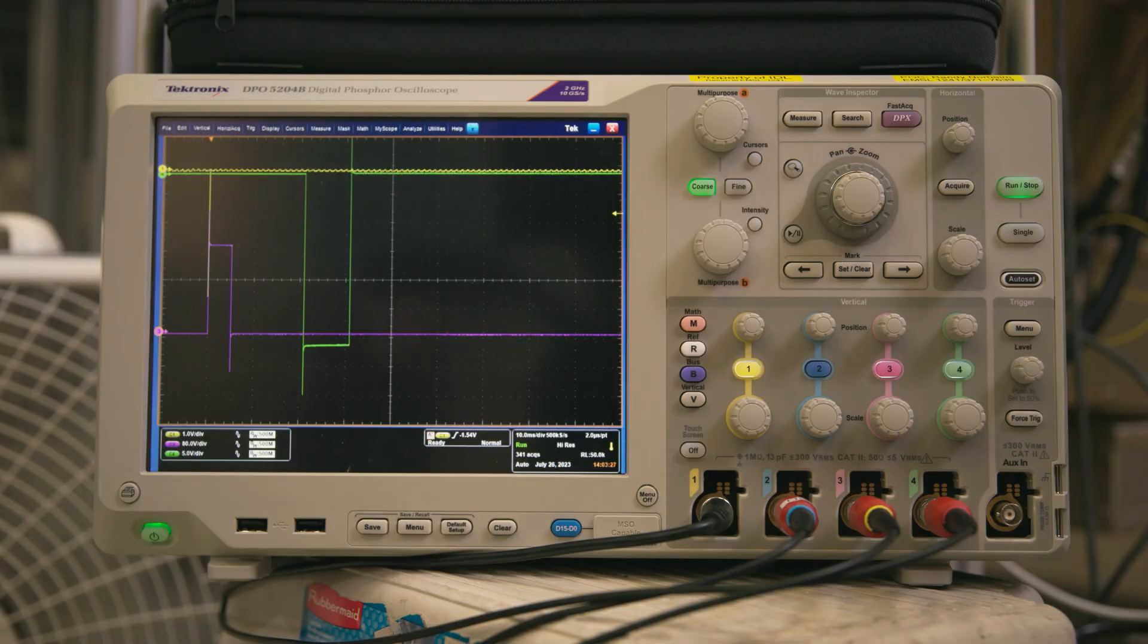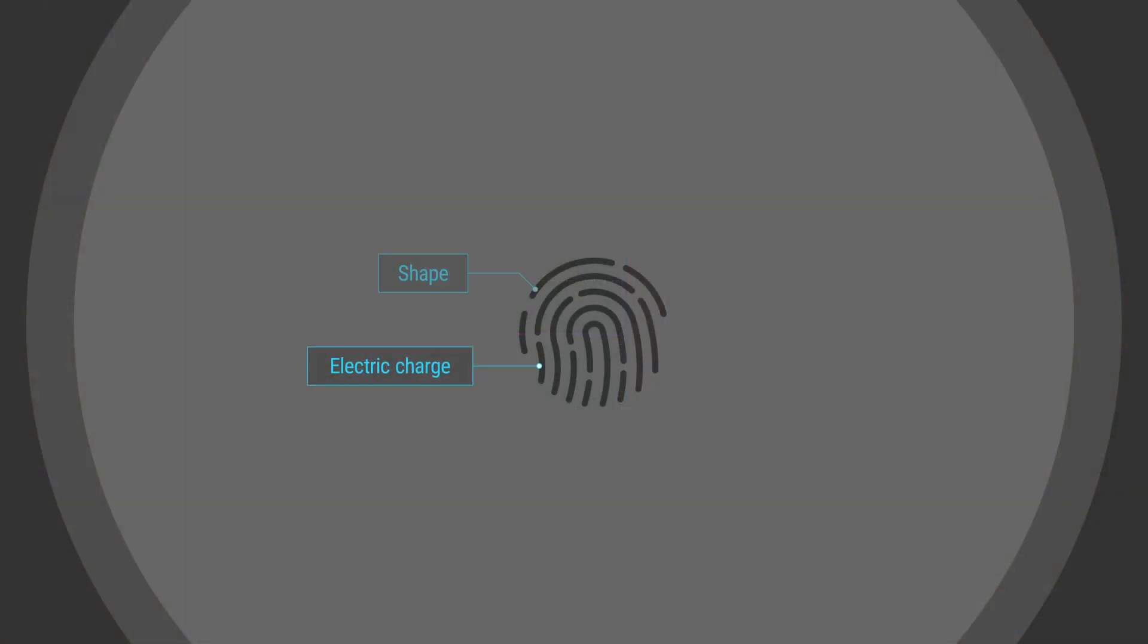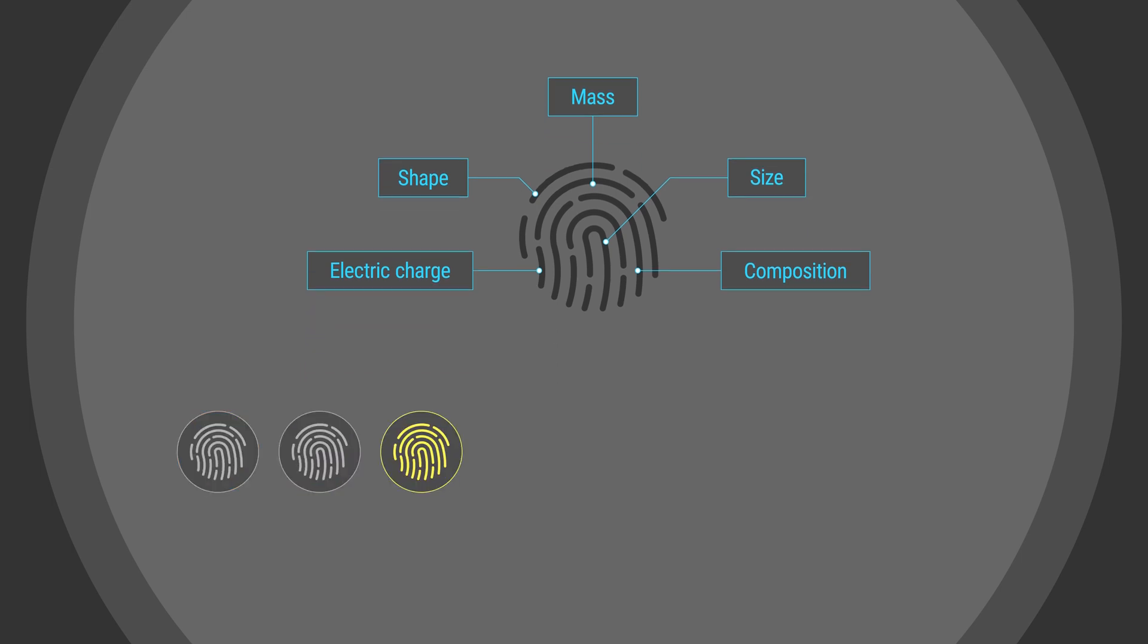We're developing new measurement techniques to get more details. The combination of these measurements provides something like a fingerprint for an ion, and that can help narrow down the number of possibilities that an ion could be.